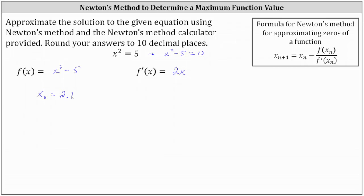And because we're asked to round the answer to 10 decimal places, what we'll do is use the Newton's method calculator and run enough iterations until the approximations are the same rounded to 10 decimal places. So now let's go to the Newton's method application.